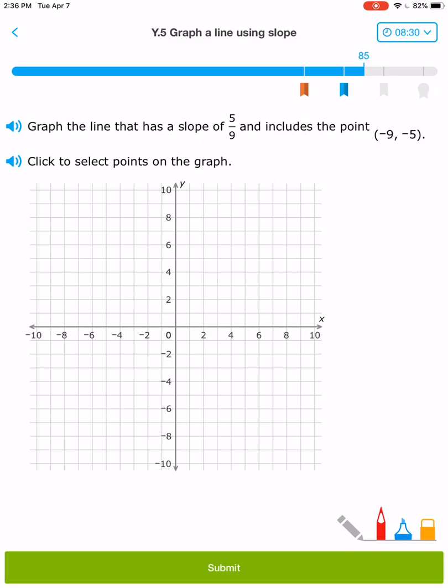I'm only going to do a few more. (-9, -5) can be found in quadrant 3. Now let's have a slope of 5/9. That's going to be 1, 2, 3, 4, 5. 1, 2, 3, 4, 5, 6, 7, 8, 9. Those are my two points.